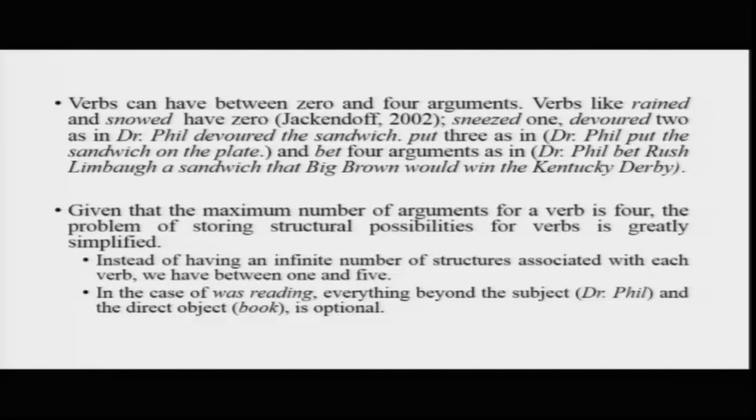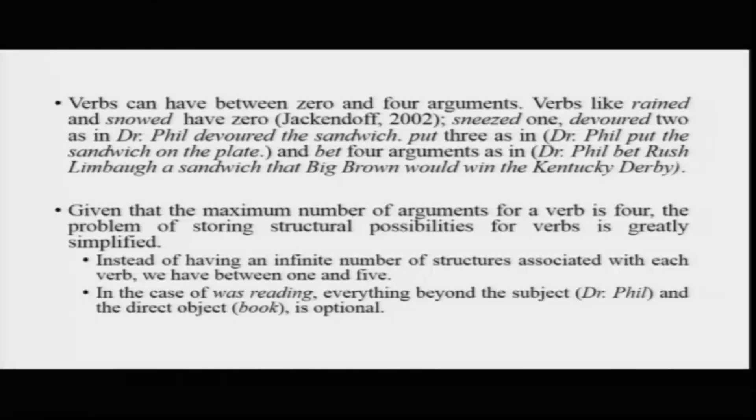Given that the maximum number of arguments is 4, the problem of storing structural representations gets a little bit simplified. You can store between 1 and 5 structures, which seals the problem somewhat. For a verb like 'was reading,' everything beyond the subject 'Dr. Phil' and the direct object 'book' is optional. Everything else — 'to the girl,' 'at the park,' 'by the fire station' — is all optional. These required elements are the arguments; everything else is the adjunct part.